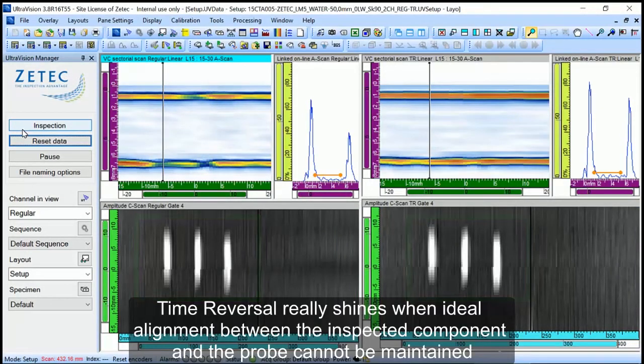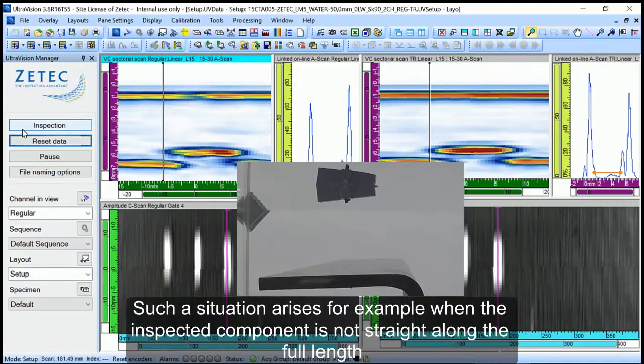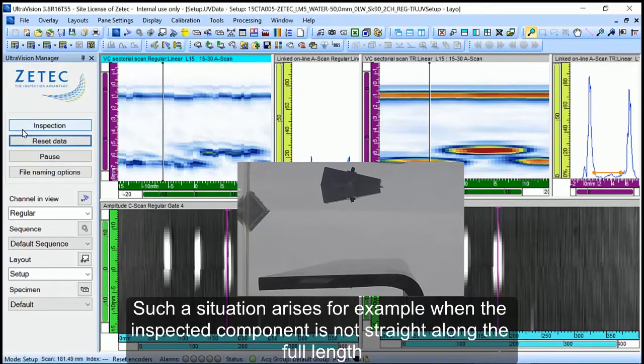Time reversal really shines when ideal alignment between the inspected component and the probe cannot be maintained. Such a situation arises, for example, when the inspection component is not straight along the full length.